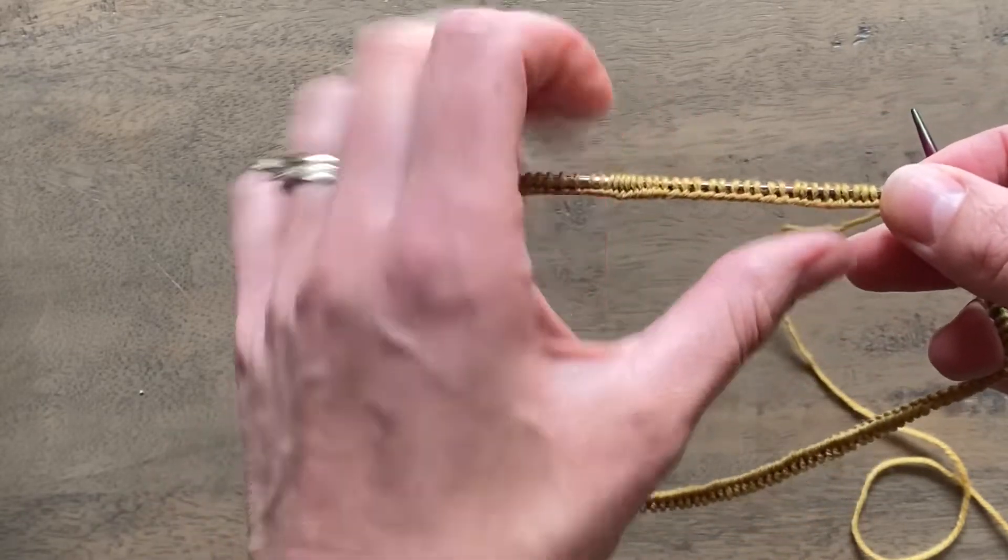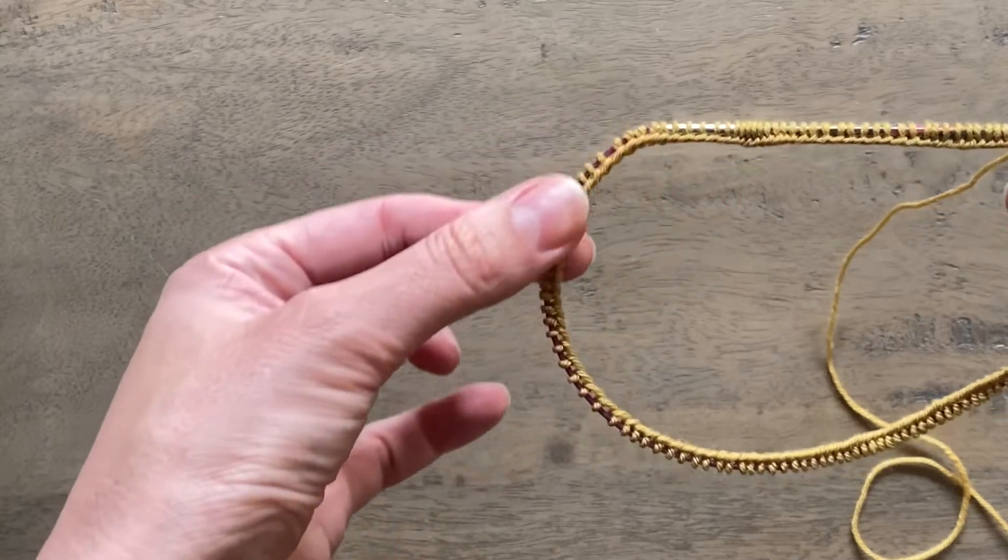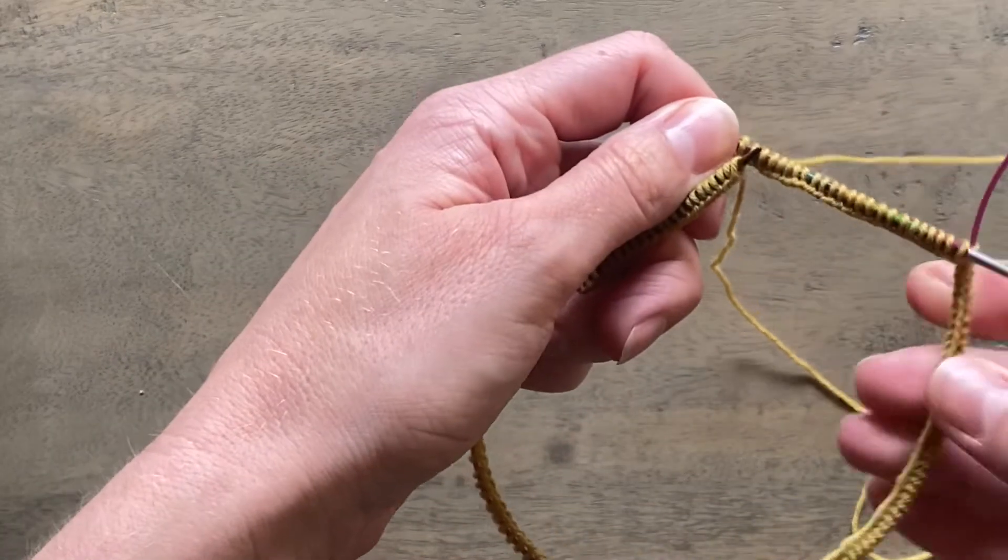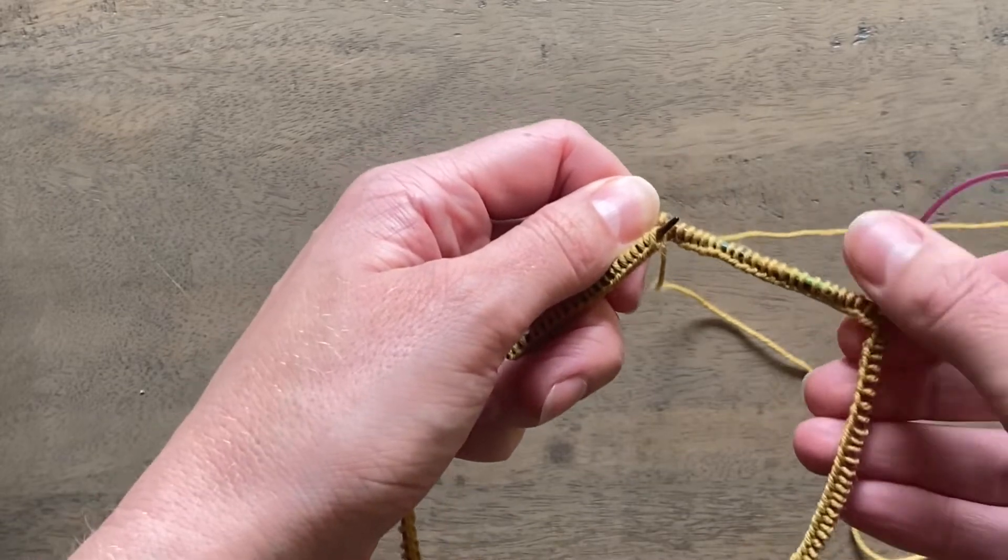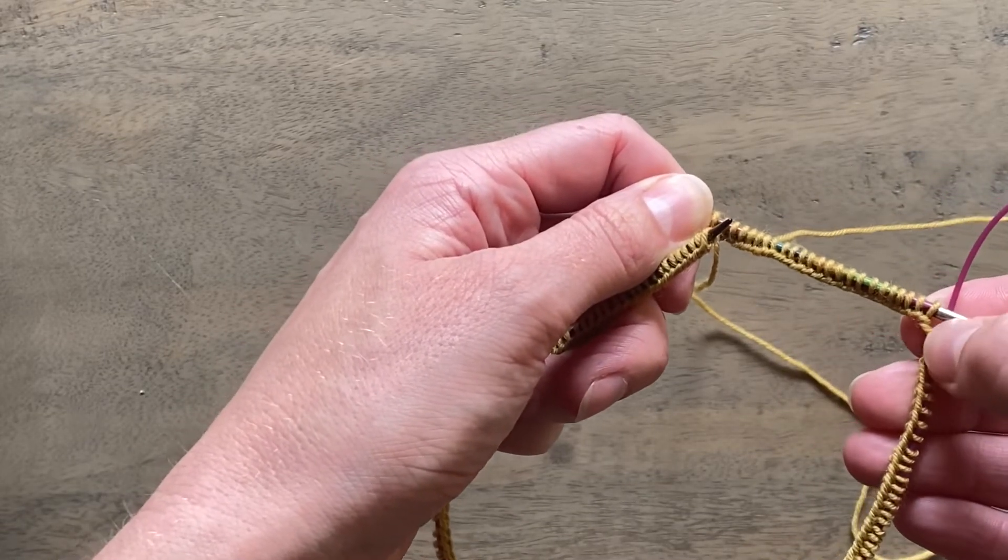So I always go around and make sure that the ridge of my cast on edge is on the inside of my cable all the way around, particularly looking at if you're using a magic loop check that bit really carefully to make sure that it hasn't twisted.